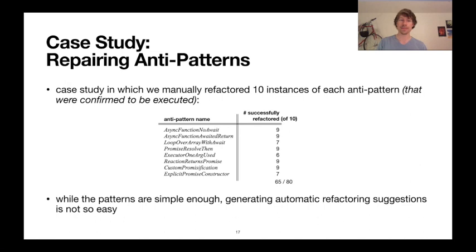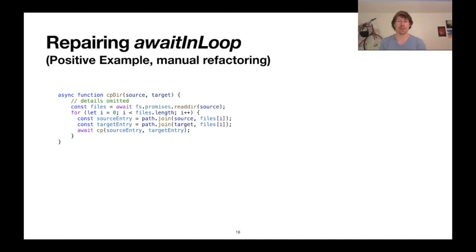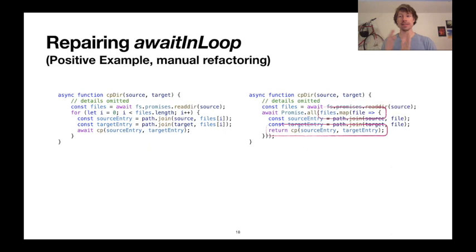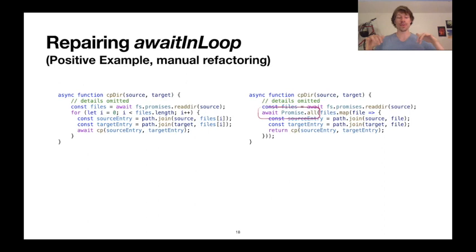Here's an example of repairing the await-in-loop anti-pattern over the cpdir function. Recall that cpdir read a directory and then for each file awaited a call to cp. We can do better. In this manual refactoring, instead of looping with a for loop, we map over all the files in the directory, and instead of awaiting the call to cp, we collect all the promises created by cp — files.map makes an array of promises. Then we await a call to Promise.all over that array. Promise.all is a promise utility resolved when all promises in the array are resolved — a way to issue multiple requests and wait for them all to finish.